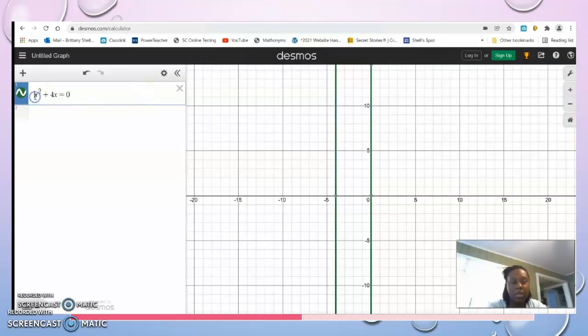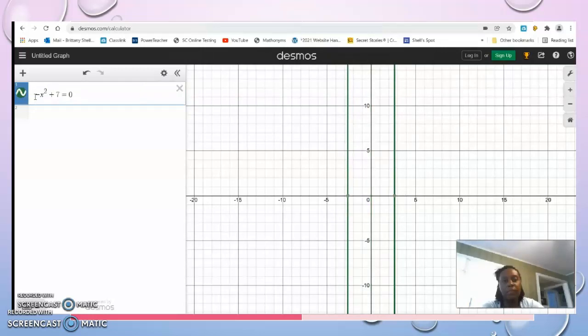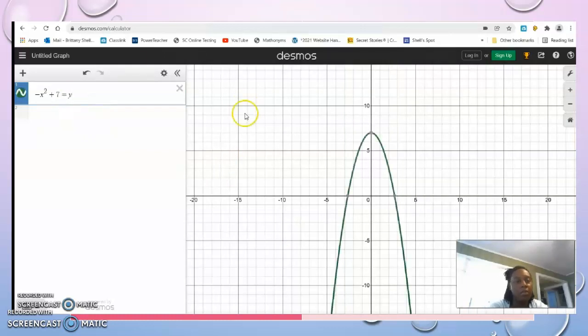Example 3 is -x² + 7. For that one your roots are at -2.646 and positive 2.646. When you set it equal to y you can see the parabola there. When you sketch the parabola on your notes page, this is what your parabola looks like. Go ahead and estimate where those two roots are between 2 and 3, and over on the left between -2 and -3. Your y-intercept is at 7.